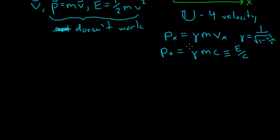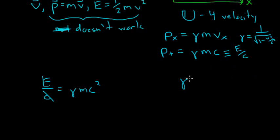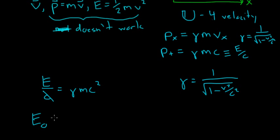Why do we call that energy? If E over c equals gamma mc, then E equals gamma mc squared. If this particle is at rest — velocity zero — then gamma equals one, and we get the famous rest energy: E equals mc squared.